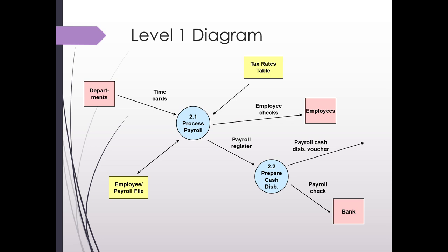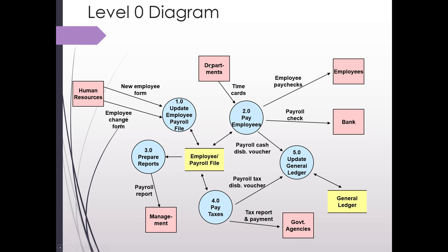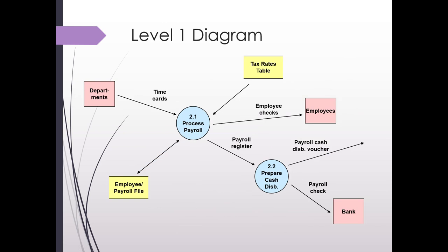We still have the incoming 'Departments' as one data source and two data destinations: employee and bank. If we look back at the level zero, that process had one source and two destinations. One thing that was added is another data store with the tax rates — adding a data store is legitimate, but you shouldn't be adding any other elements. The number of sources and destinations that point to that process should remain the same. The payroll cash disbursement voucher is what would go to step 3.0 from the previous diagram.